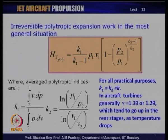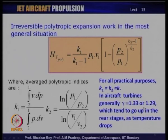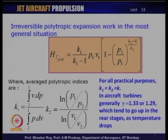In aircraft gas turbines the value of gamma is generally 1.33 and could go down to 1.29 depending on temperature. As operating temperature through the turbines goes down, the value of gamma tends to go up. In HP turbines where temperatures are very high, gamma is likely to be 1.29, while in LP turbines it could go up to 1.33. The parameters gamma as well as Cp and Cv are dependent on the operating temperature at each location.